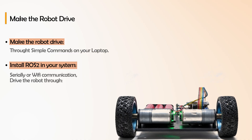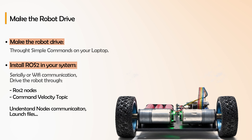First, make the robot drive through simple commands on your laptop. Then install ROS 2 on your system and use serial or Wi-Fi communication to drive the robot through ROS 2 nodes via the command velocity topic. Understand nodes, communication, and launch files — no need for services yet. Just drive the robot through command velocity. That is the first step to make your robot interface with the ROS 2 system.